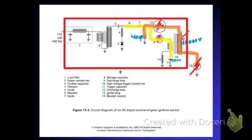Everything inside the red square is our igniter box and of course 13, our igniter plug, will be out at the engine itself. Thanks for watching.